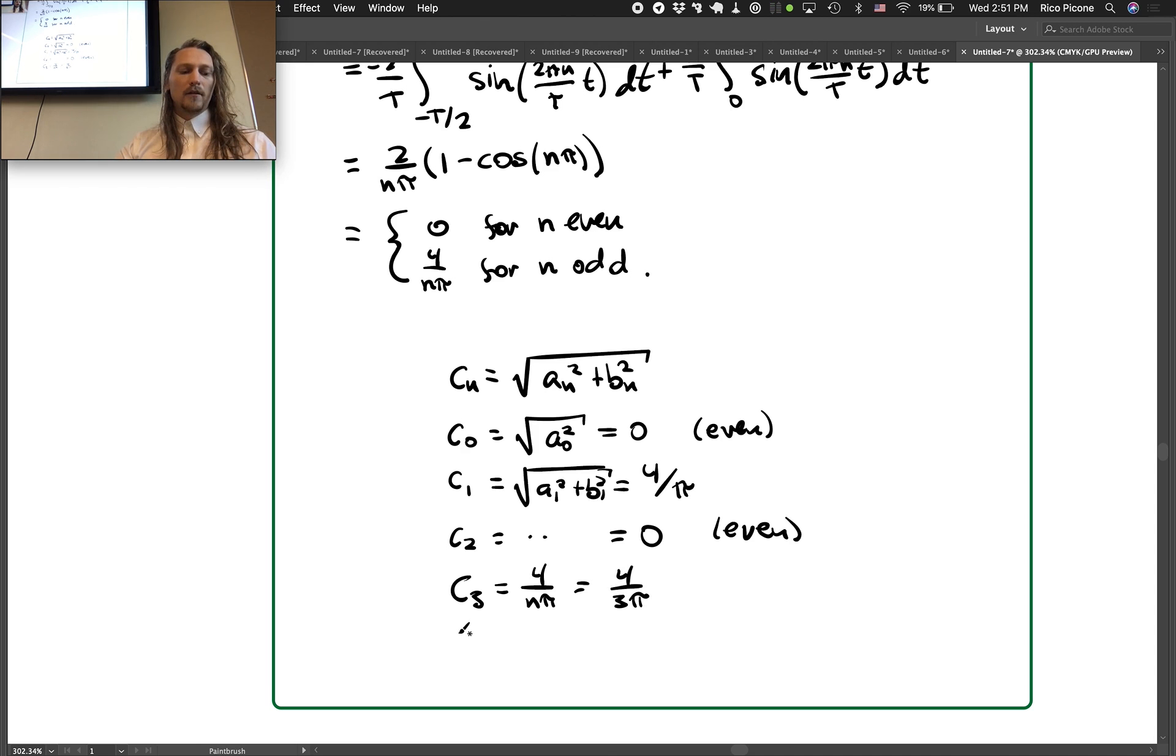And then c4 is even so it's going to be 0 and c5 is 4 over 5 pi. Yeah, for this problem.